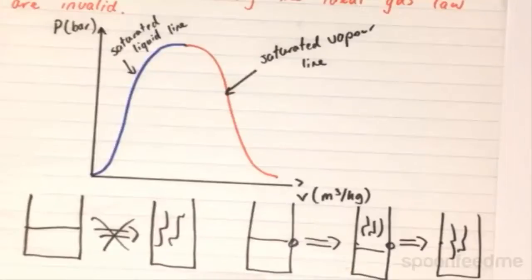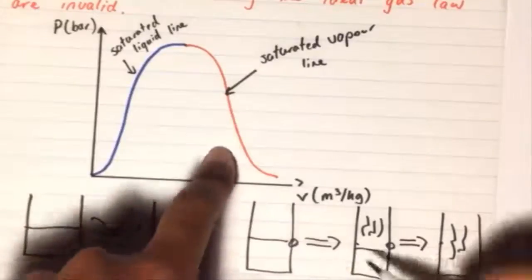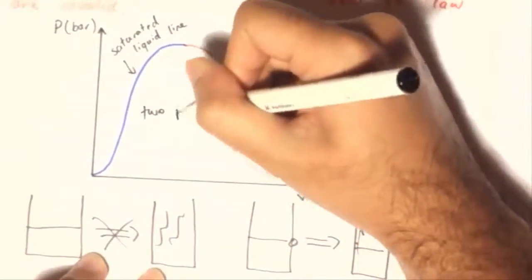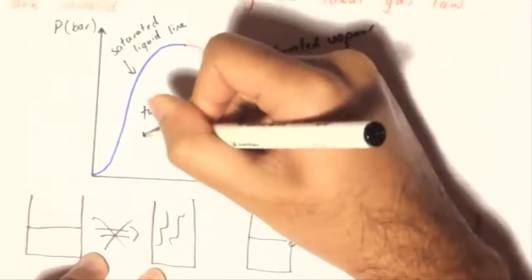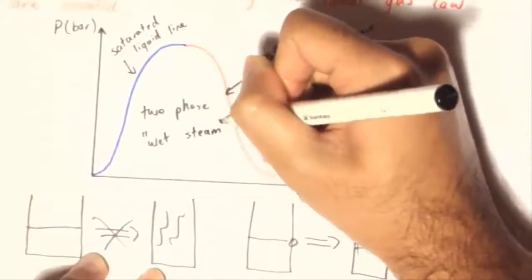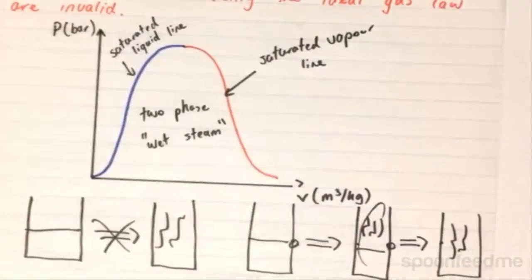Now, this middle region that we have here is this hybrid region. And this is what we call the two-phase, or the wet-steam region. Essentially, what exists here is this mixture.